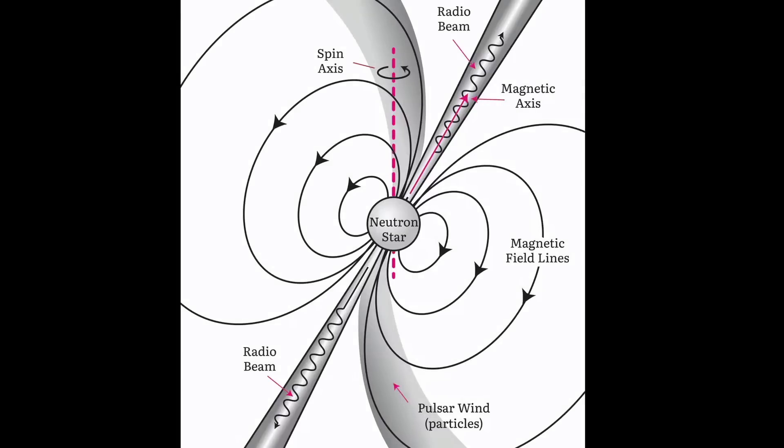Since then many more pulsars have been observed, and the shortest pulse ever detected was a staggering 1.4 milliseconds. Where does the neutron star come from and why does it rotate so fast?